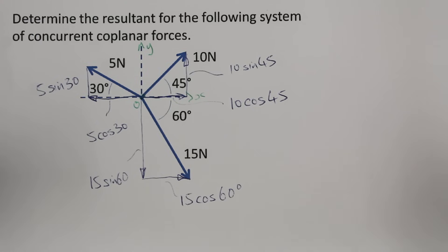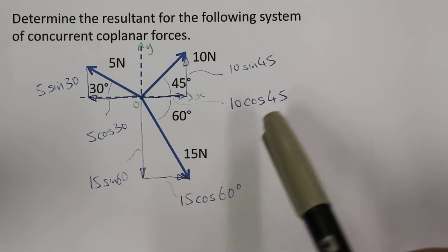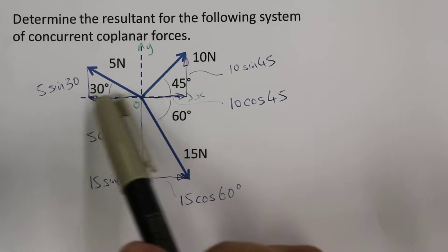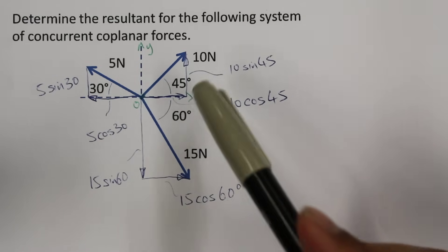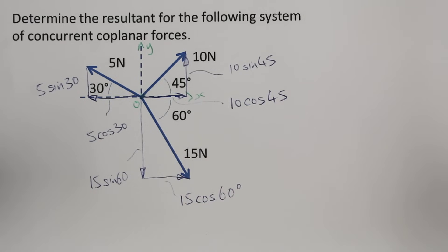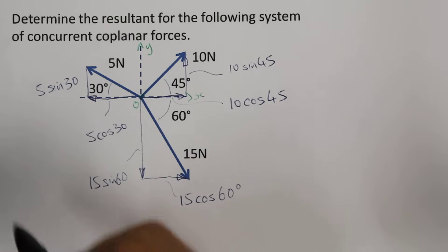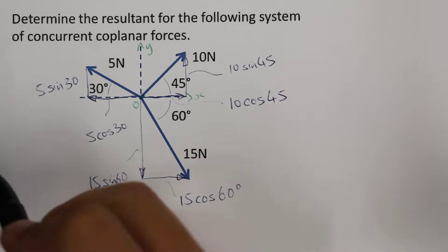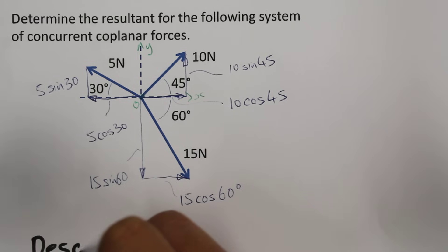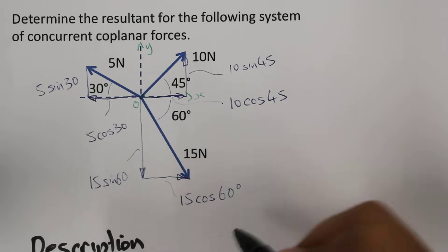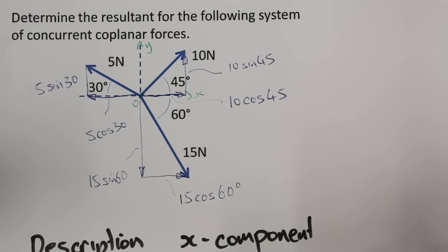Now the first step for finding the resultant is to find the components of each force. We can see x-components for each vector and y-components for each vector. We'll go through the tabular method for finding the resultant. We'll construct a table with the description, the x-component, and also the y-component.